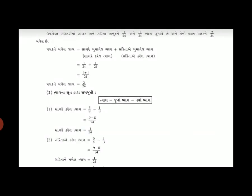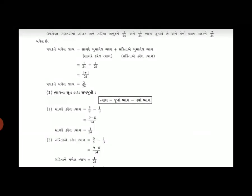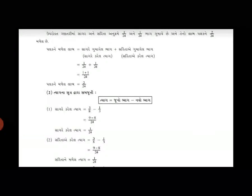આ ચેપ્ટરના નાના દાખલા પૂરા થાય છે. એક વસ્તુ ક્લિયર કરી લઈએ: જો પ્લસ (ધન) માં આવે તો એને 'લાભ' જ કેવાય, અને જો માઈનસ (ઋણ) માં આવે તો એને 'ત્યાગ' જ કેવાય. હવે ઉદાહરણ નંબર 9 ઘરે ગણ્શો, અને પેજ નંબર 170 ઉપર જે તફાવત આપેલો છે - ત્યાગનું પ્રમાણ અને લાભનું પ્રમાણ - એ એક વખત બુકમાં લખવાનો છે અને યાદ રાખો. થિયરી ઓ.